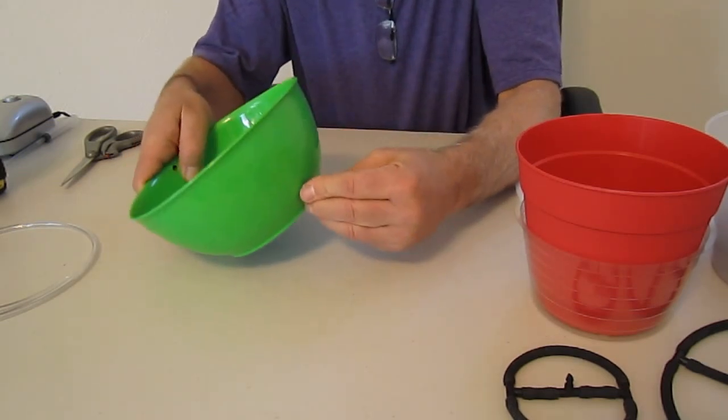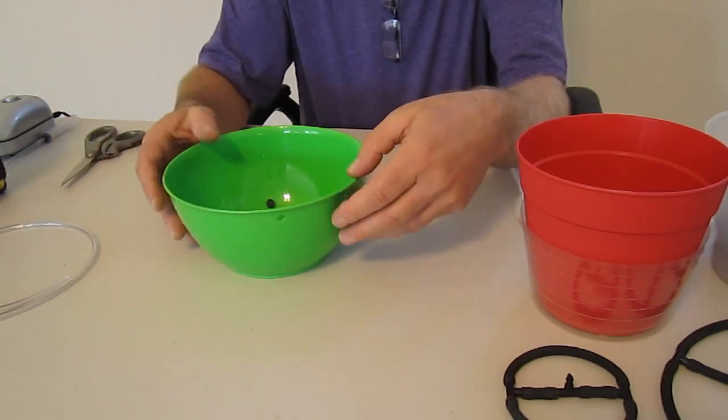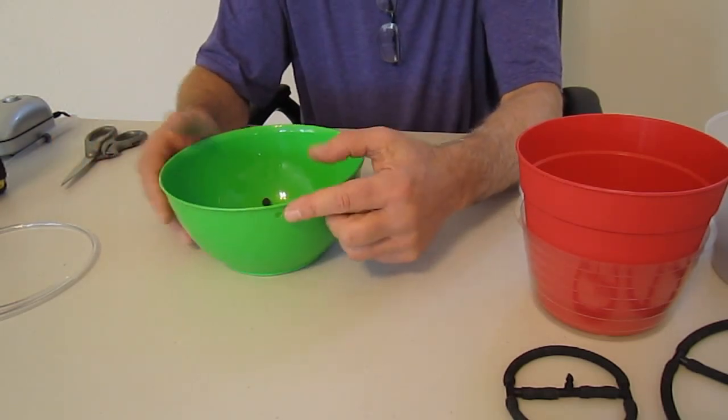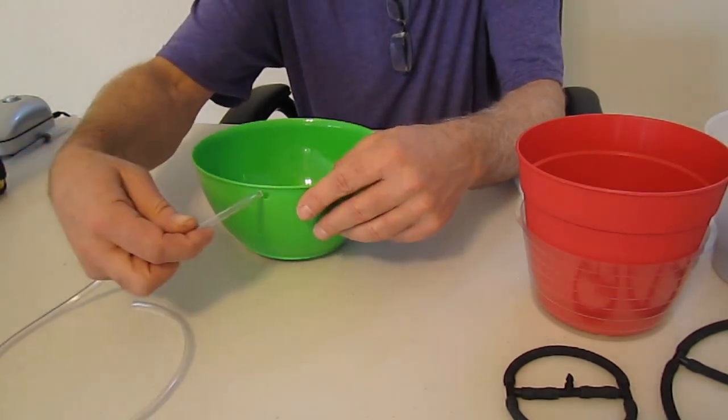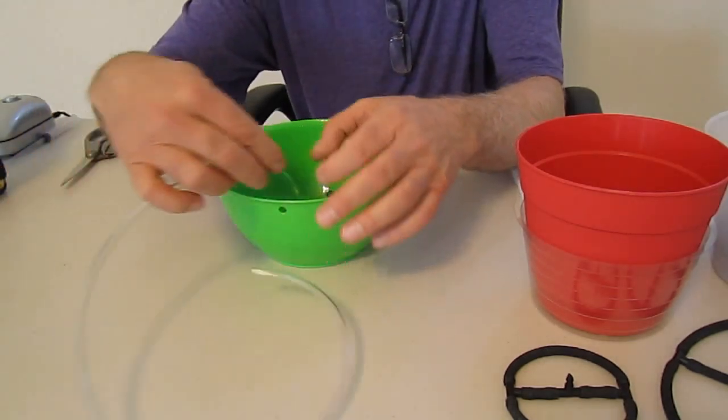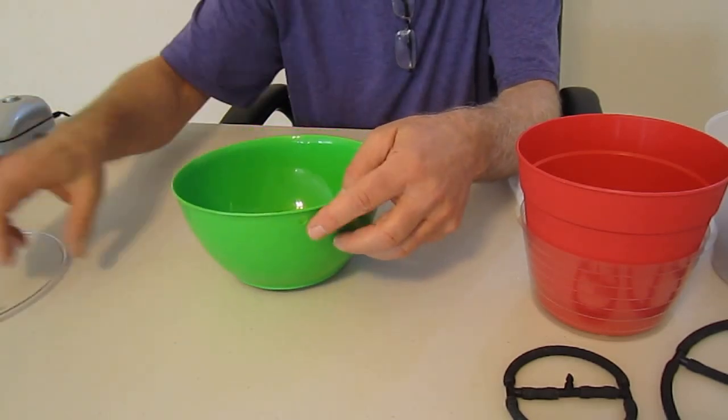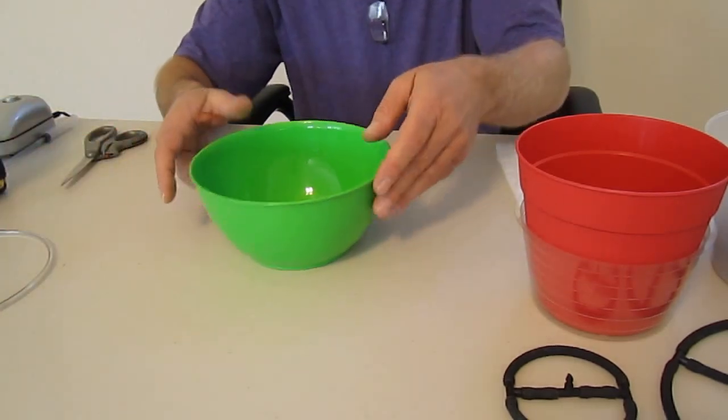All right, once we do that, now we did add another extra. We drilled a hole in the side of the pot to allow for our air line to go through. We just think it looks a lot nicer. You can have it hang over the edge, that's fine. But we just think it looks more professional, it just looks more high-tech, and it looks cooler.